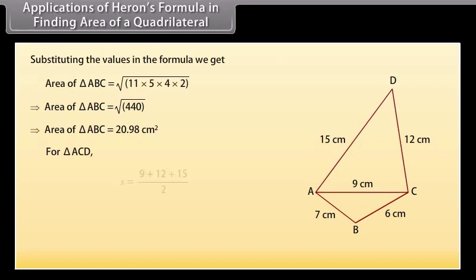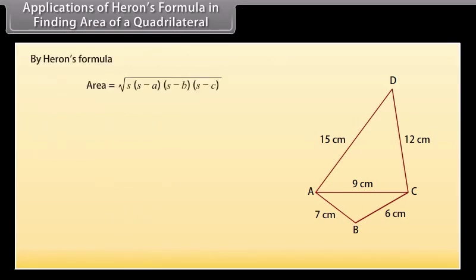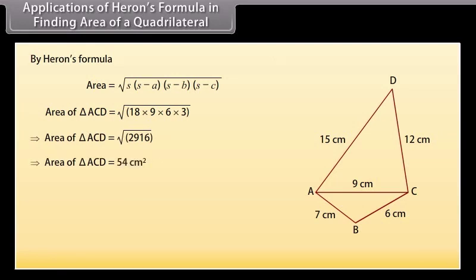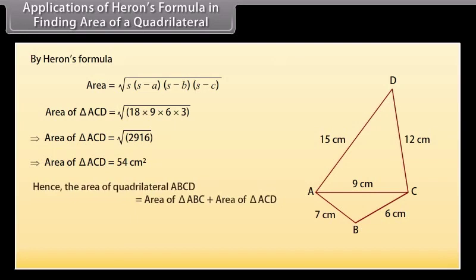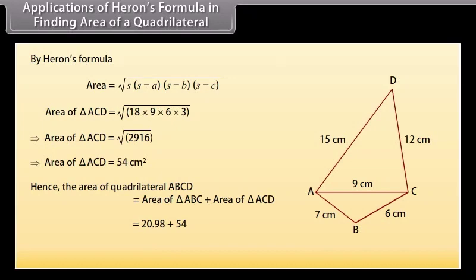For triangle ACD: S = (9 + 12 + 15) / 2 = 18 cm. By Heron's formula, area = √(18 × 9 × 6 × 3) = 54 cm². Hence, the area of quadrilateral ABCD = area of triangle ABC + area of triangle ACD = 20.98 + 54 = 74.98 cm².